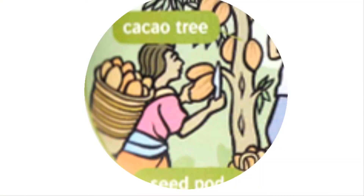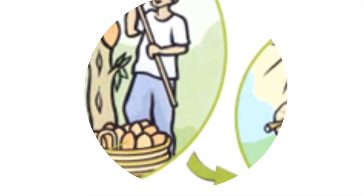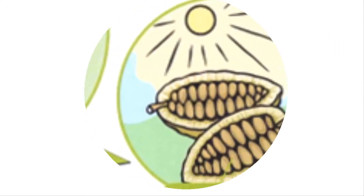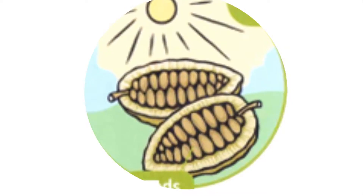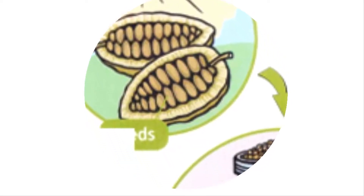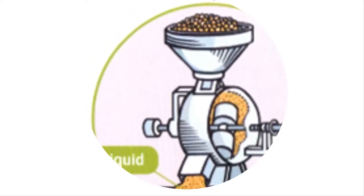To make chocolate, people take seed pods from cacao trees and leave them in the sun. Then they throw away the outside and keep the seeds.